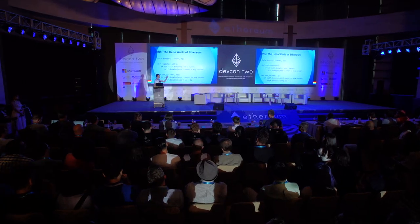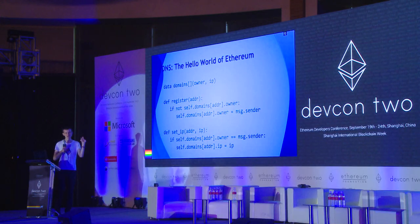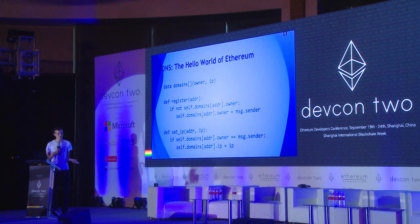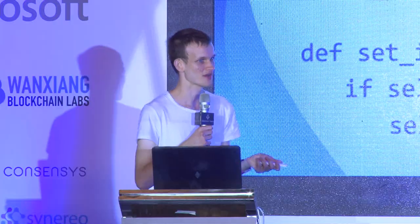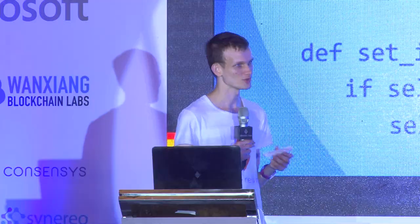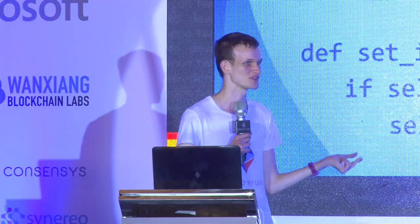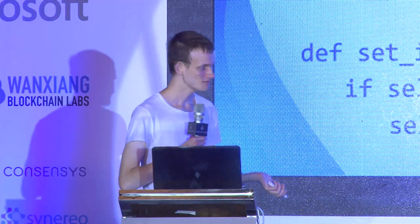You have this piece of code, you compile it, get some bytecode, include the code in a transaction, and push the transaction onto the blockchain. What you've created is a contract with an address — some 20-byte string like 0x357c whatever. If you want to register a domain, you send a transaction specifying it's going to talk to this contract. The transaction can try to register a domain or set the IP address.